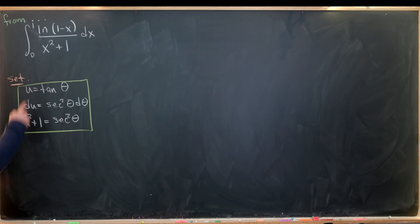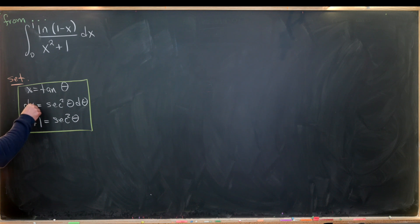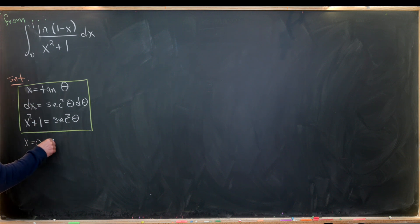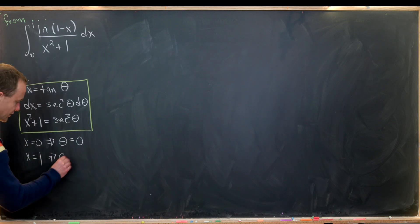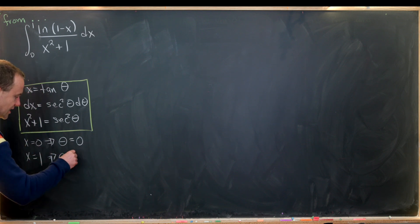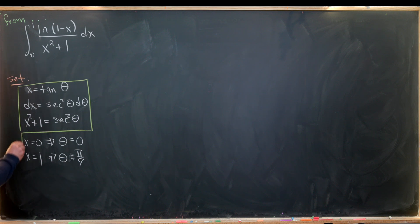Now let's see what happens with the endpoints. When x is equal to 0, that means tangent of theta equals 0, which means theta is equal to 0. When x is equal to 1, that means tangent of theta is 1, which means theta is equal to pi over 4. So that gives us new bounds of integration in the theta world.